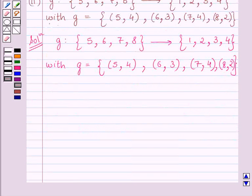We know the function is invertible only if it is one-one and onto function. Now, we know g(5) = 4, g(6) = 3, g(7) = 4, and g(8) = 2.